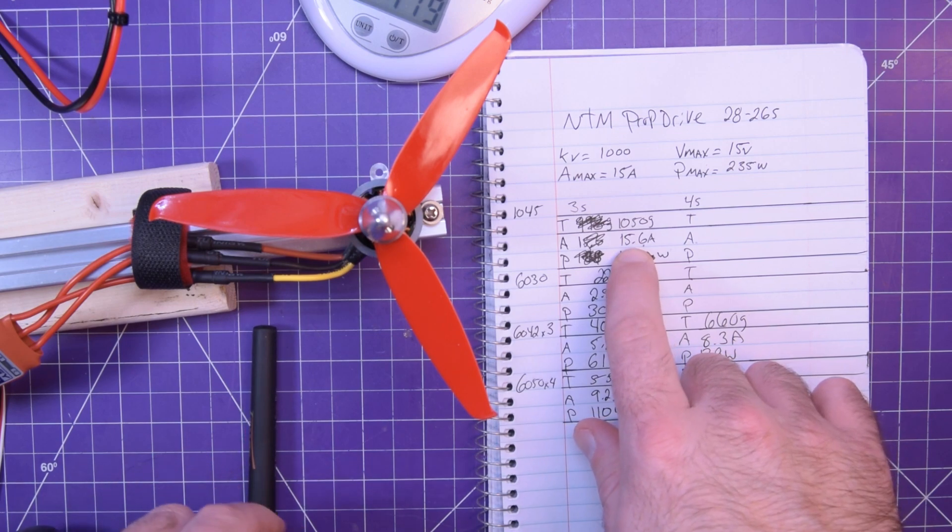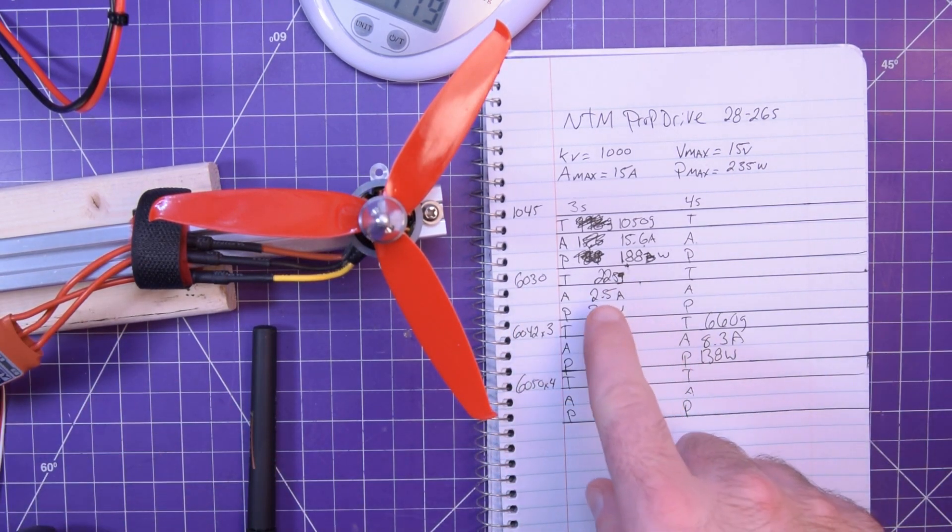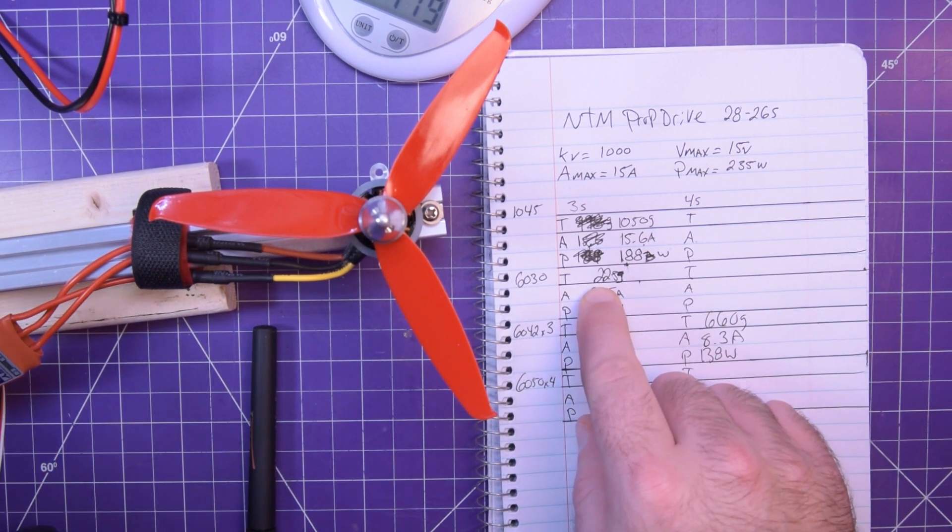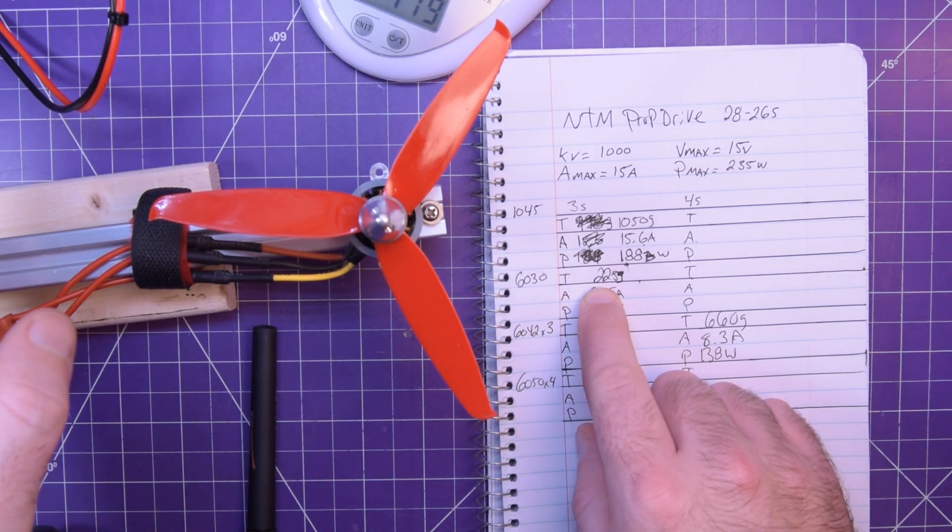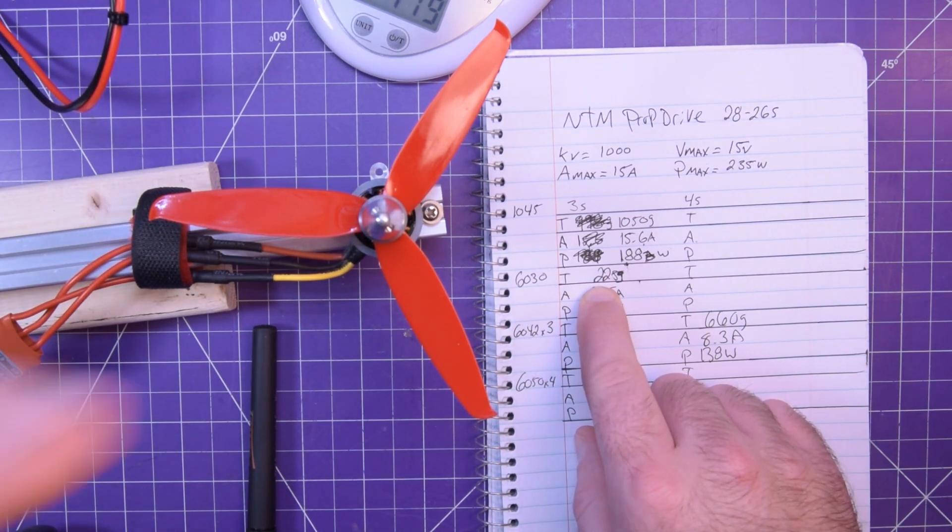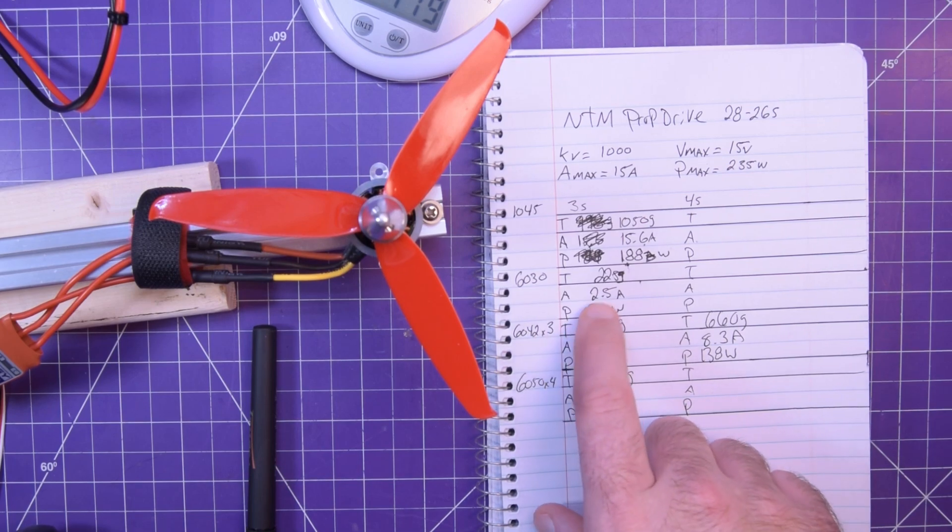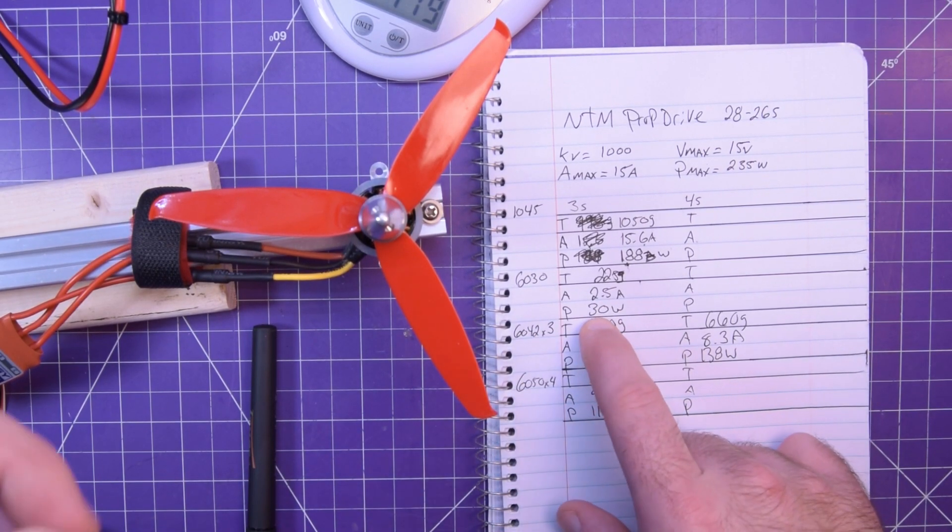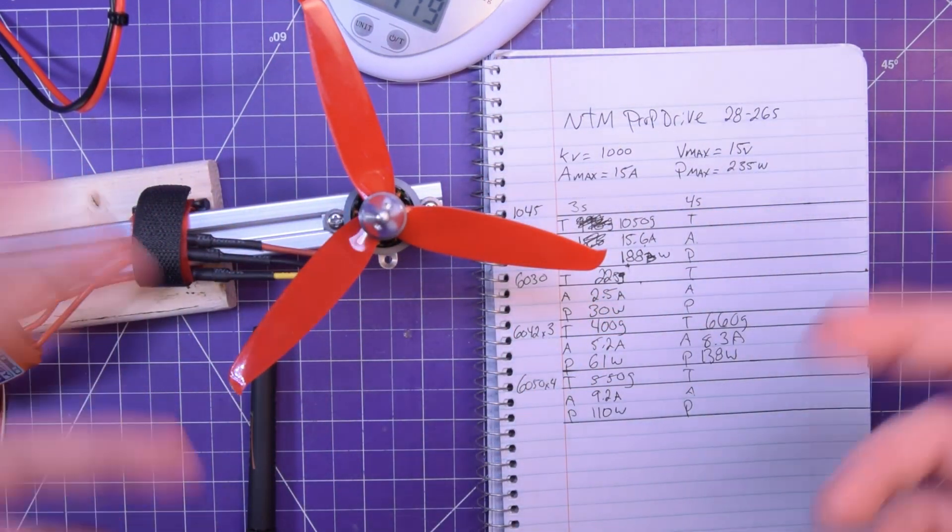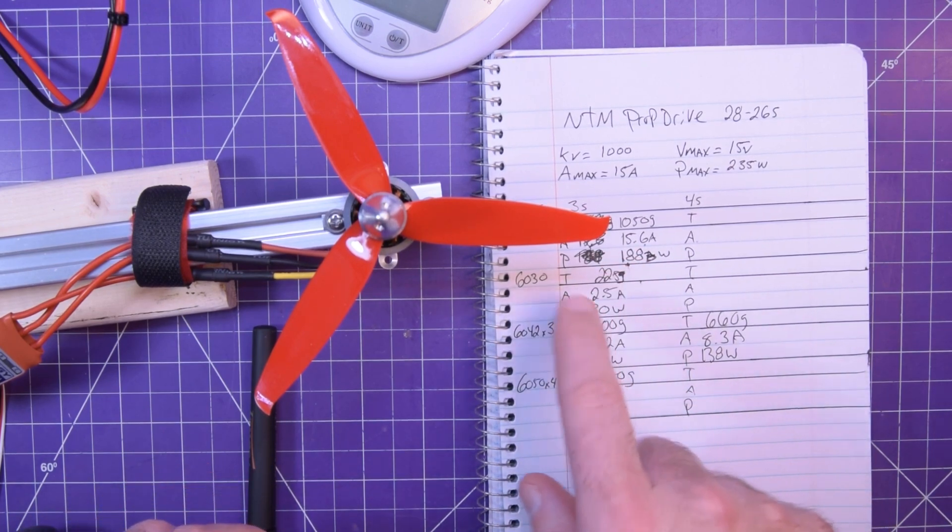Now we just moved down to a six inch prop, two blades, 225 grams. So you can see there's a big difference as you go down, less than half. You go down by four inches from 10 inch to a six inch and you lose three quarters of the thrust. And that's because if you look, the current is super low, 2.5 amps and 30 watts. So this motor wasn't working hard enough to make any decent thrust. The RPMs need to go way higher to make thrust with this prop.